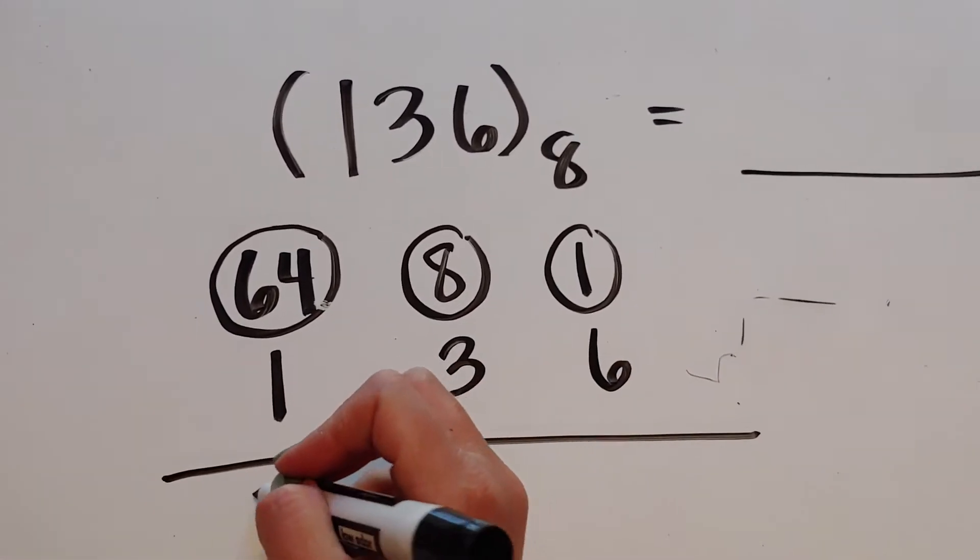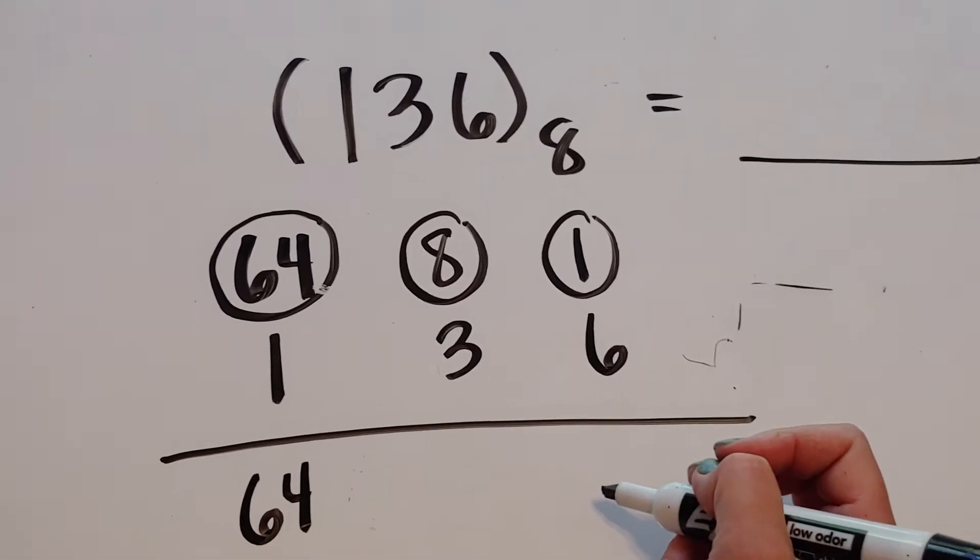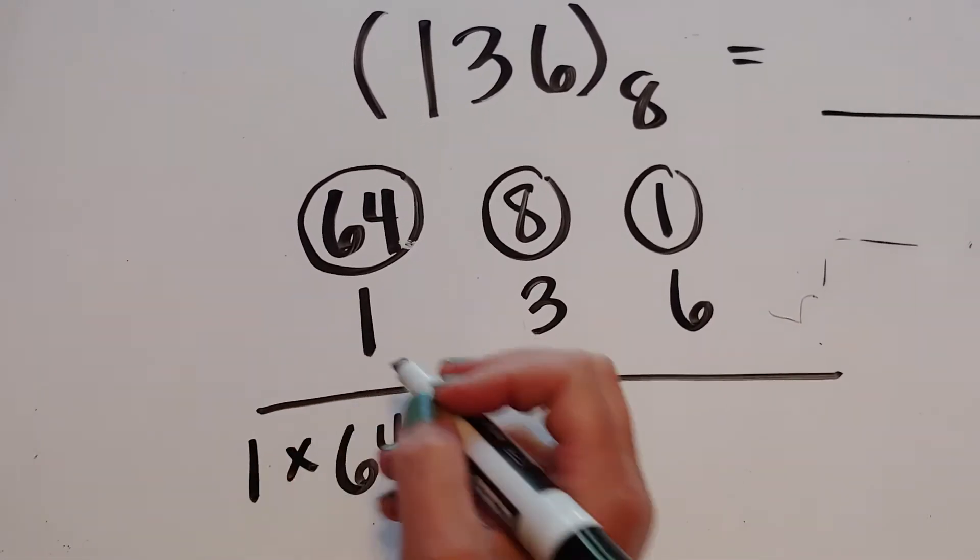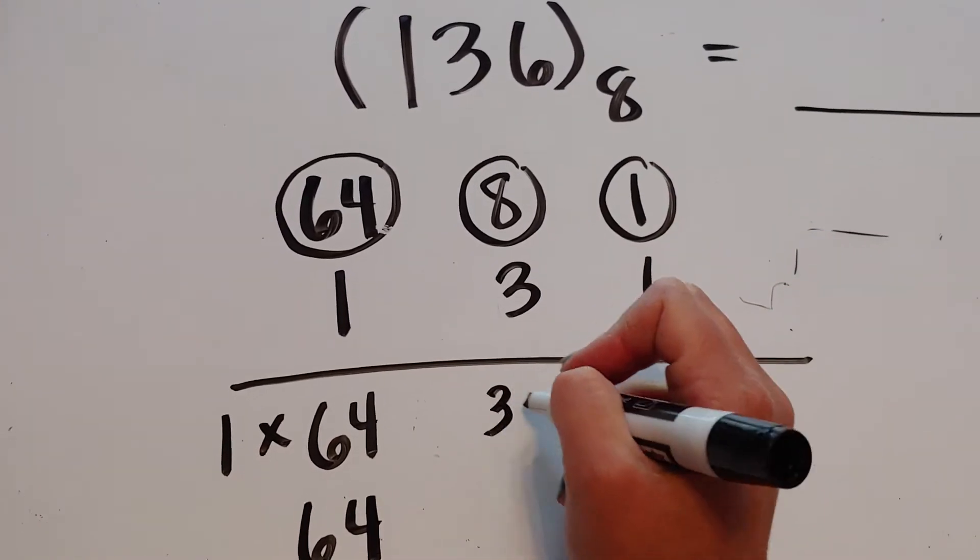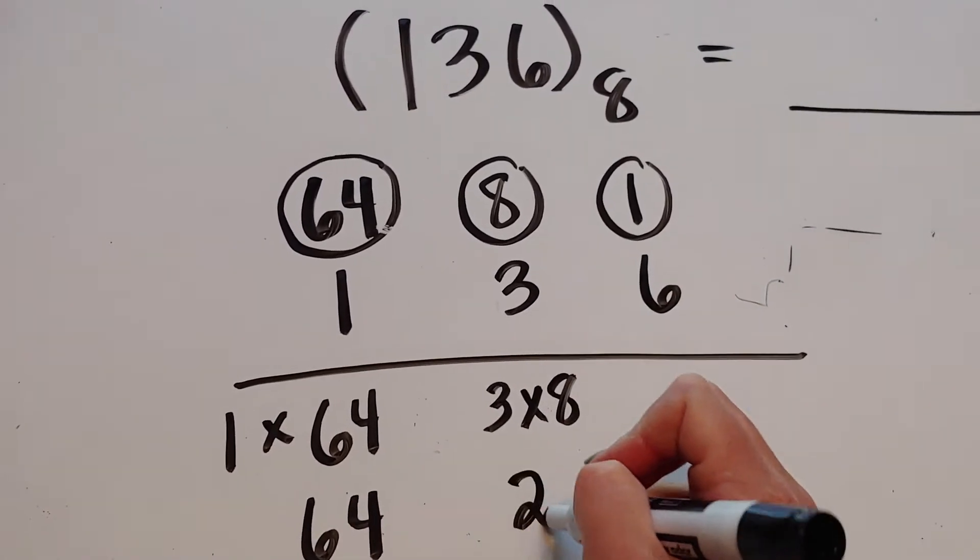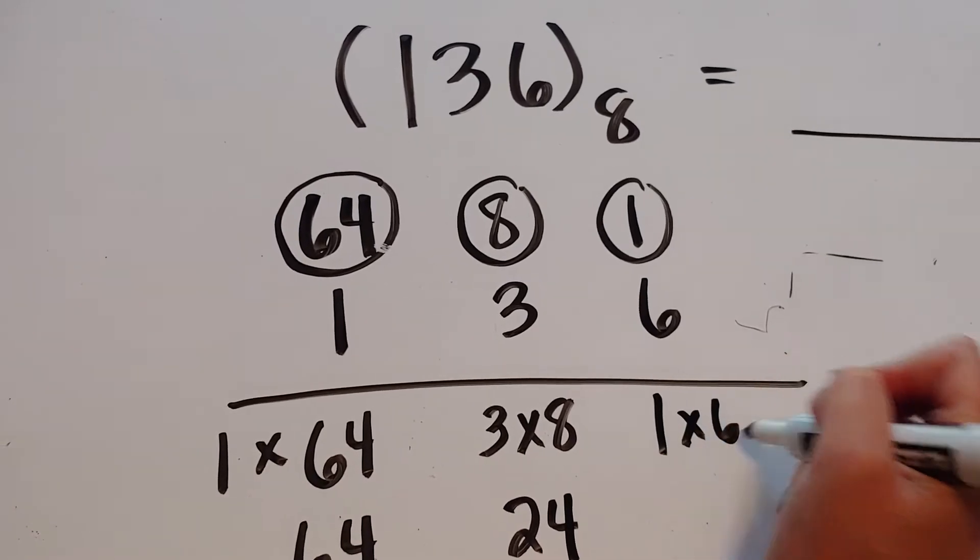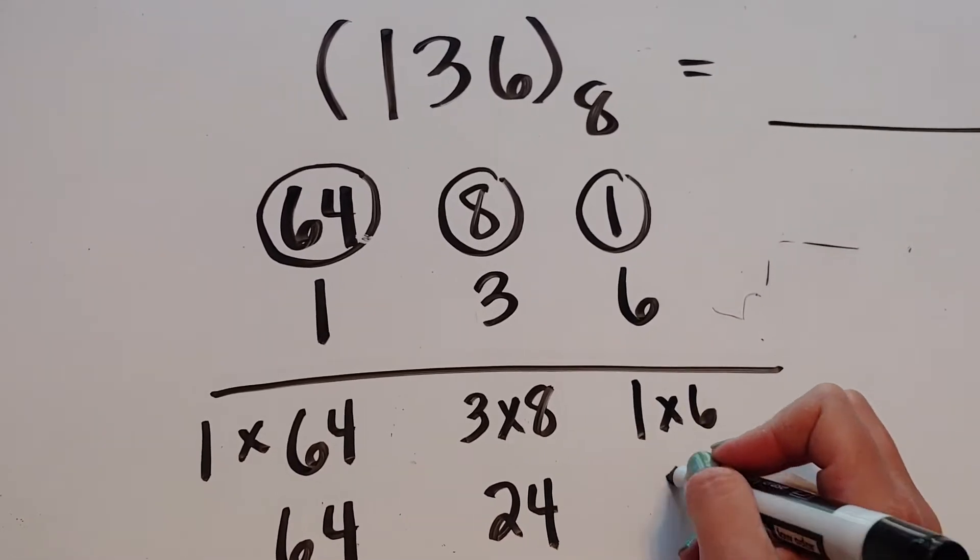64 times 1 is 64 cents, right? So 1 times 64, shall I write it that way, is 64 cents. 8 times 3 is 24, and 1 times 6 is 6.